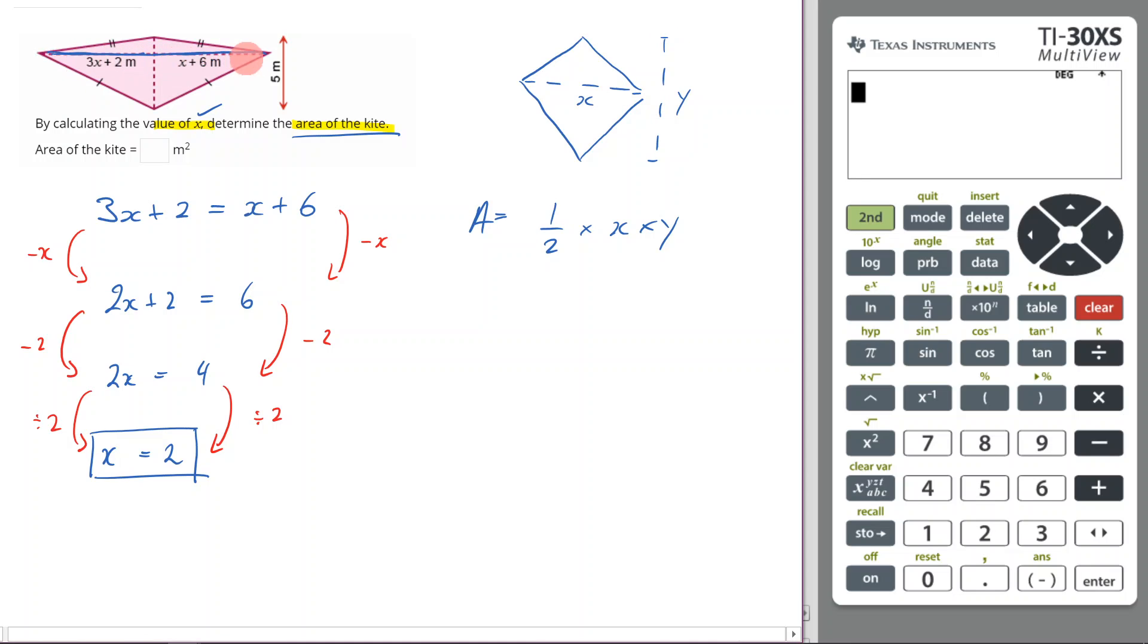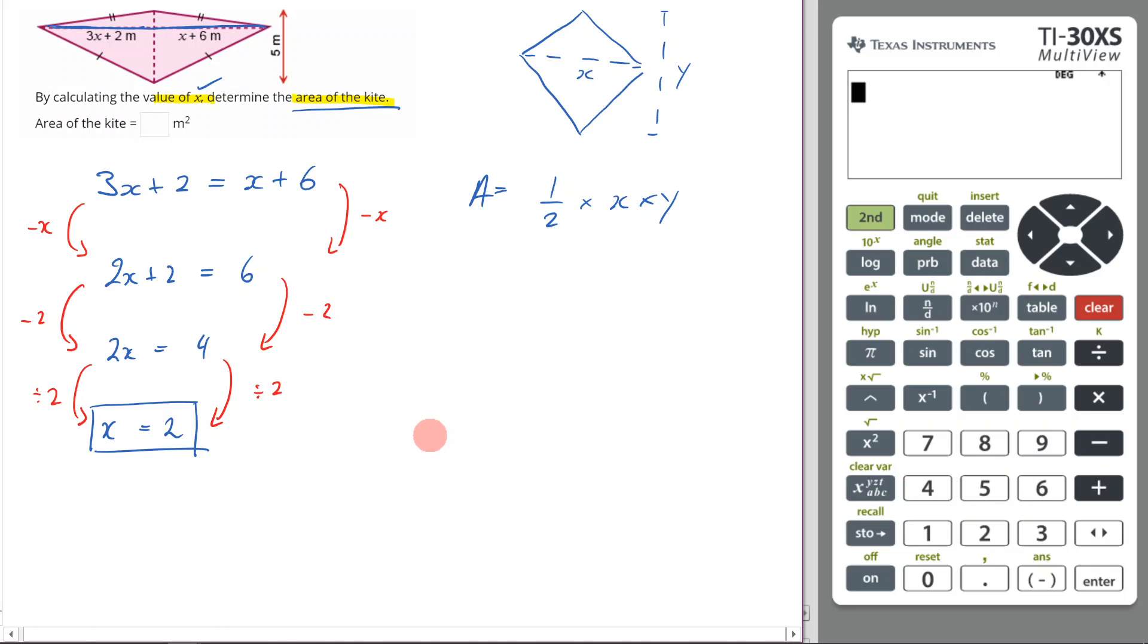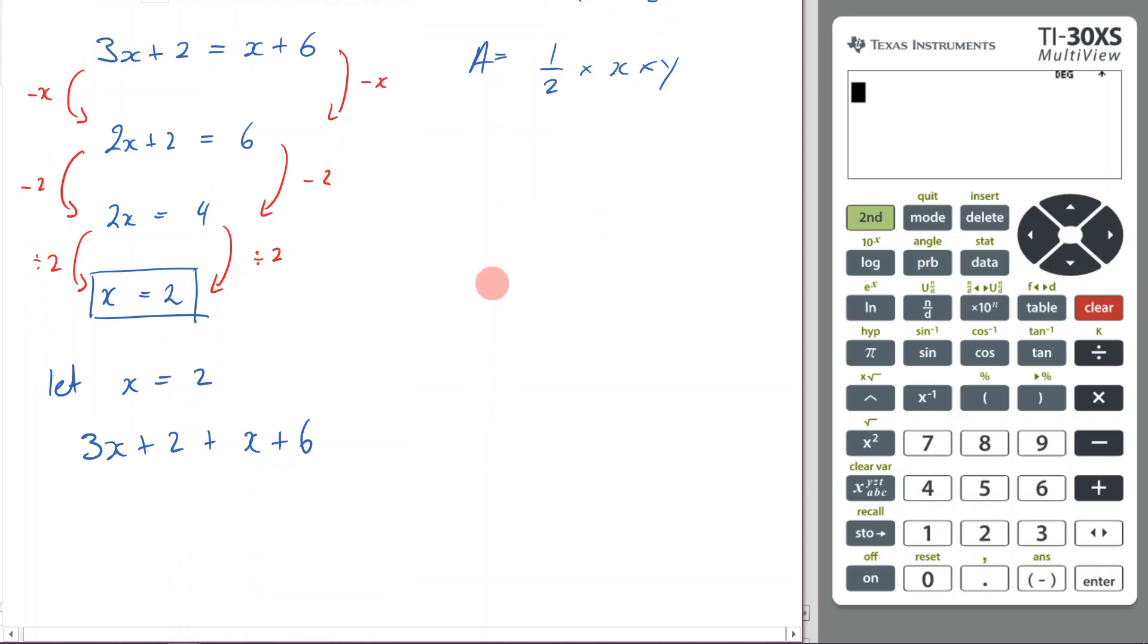So what is this length going to be? Well, if x is going to equal 2, what I can do is let x equal 2. Now if I have 3x plus 2 plus x plus 6, so I'm adding together this side and this side, but I'm going to let x equal 2.